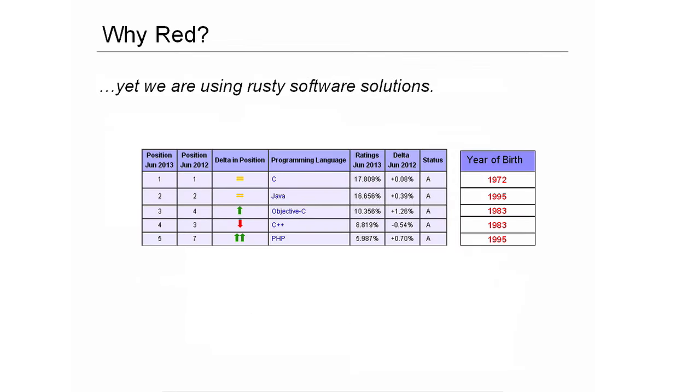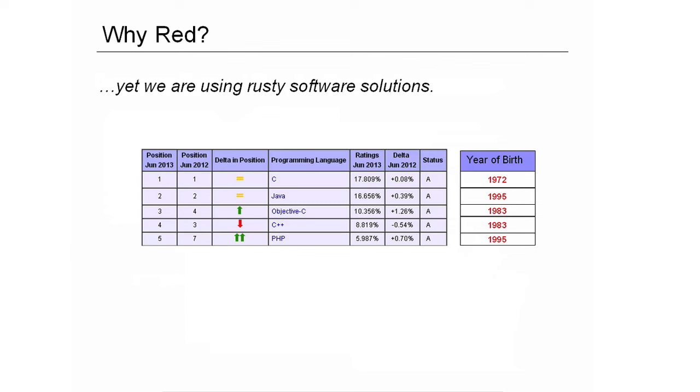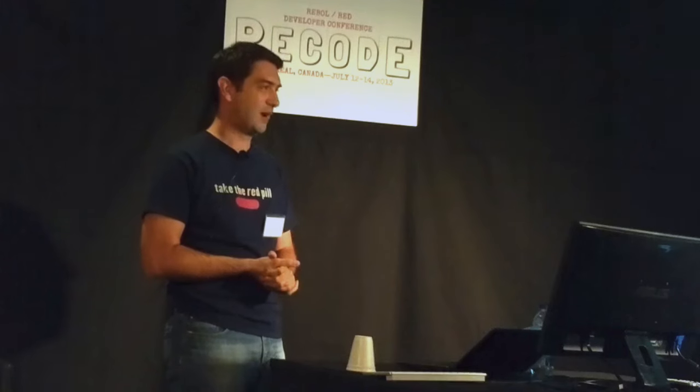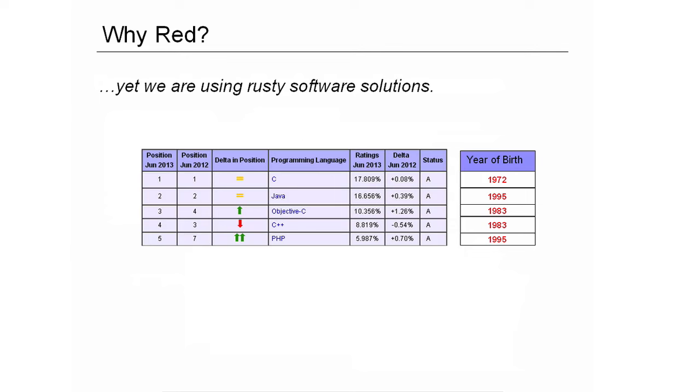Despite those changes, we are still using very old tools. I took just the five most popular programming languages from the TIOBE index. C is still the main one and it has almost 40 years now — that's quite a long time in computing. C is absolutely not meant to address the modern needs for computing, and if you look at the others, it's more or less the same thing.